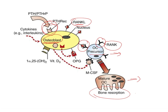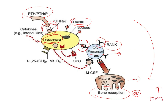Tooth movement will only take place when there is bone resorption — one side the bone is resorbed and the other side bone is deposited; this is how the tooth moves. Bone resorption is very important to bring about tooth movement. So an increase in PTH ultimately leads to increased maturation of osteoclasts, which increases bone resorption and thereby increases tooth movement.